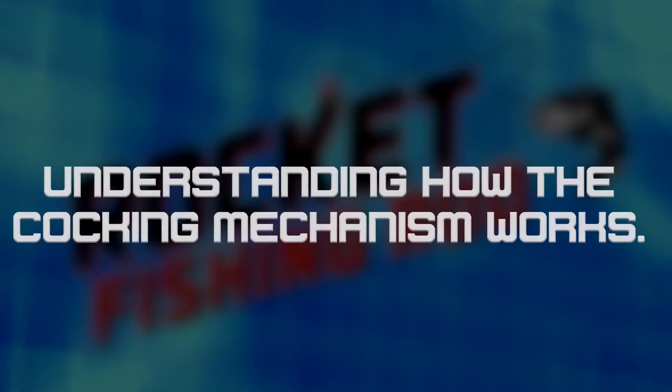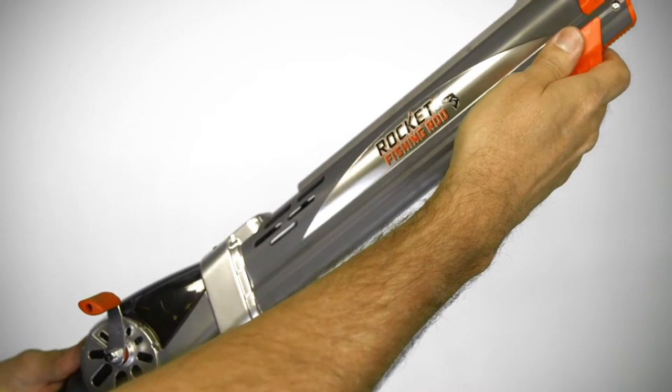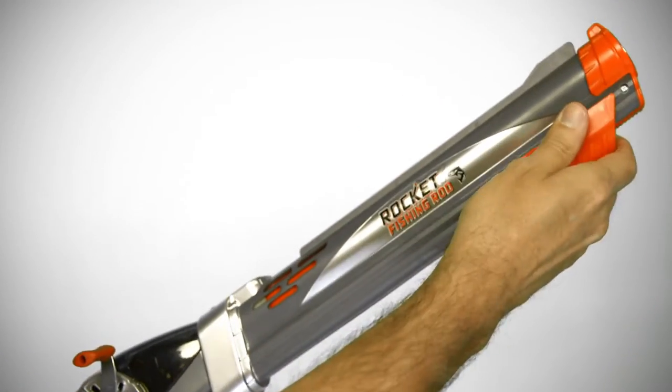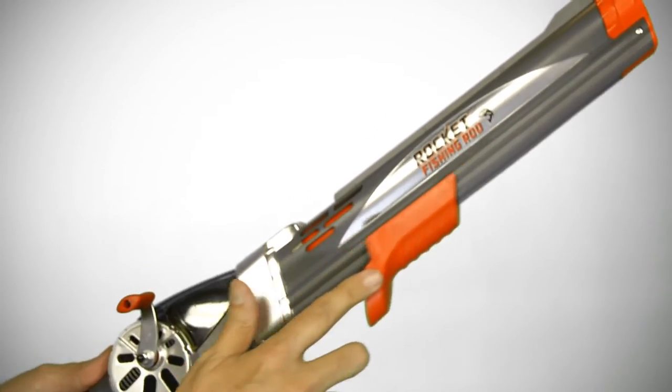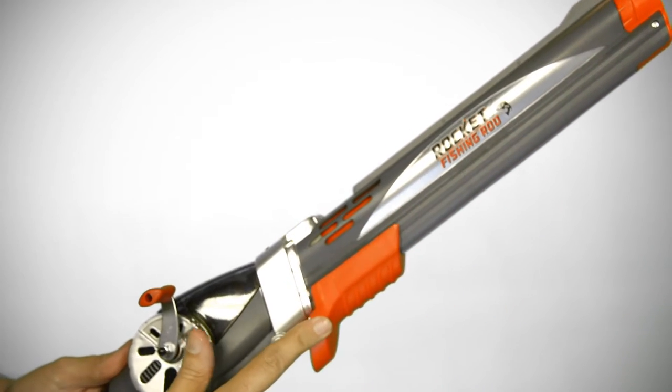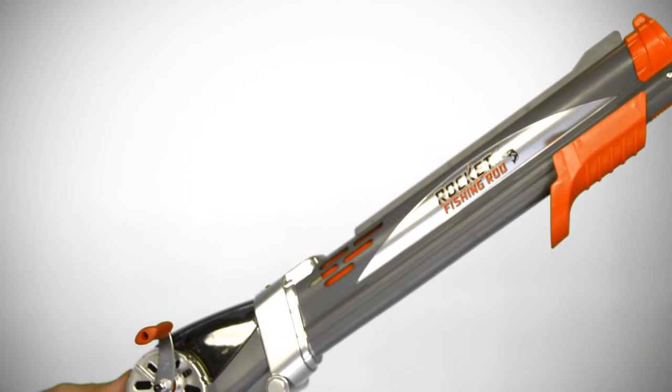The most common questions we receive here at Goliath Games is from consumers asking about the cocking mechanism and why it's loosely sliding back and forth along the barrel. This will happen even if the rod has already been cocked; it will never lock into place.